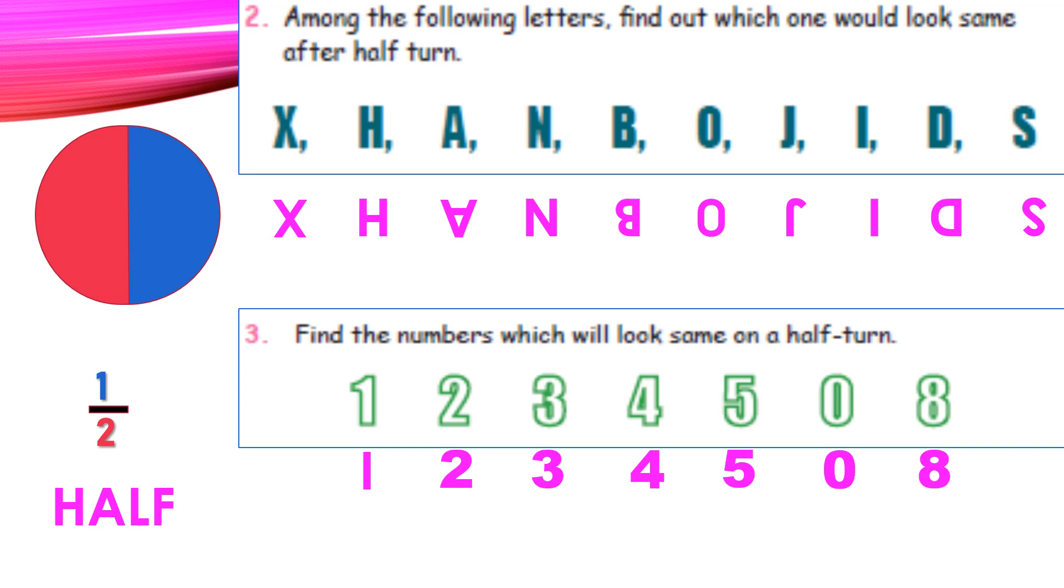Now we have to put a tick mark. X is looking as the same only. H, yes, looking same. A is not looking same, so we should not put tick for that. N, yes, it looking same only. B, no, it's not. O, yes, it's correct. J, also no. I is correct only. D, also not possible. But finally, S, also looking as the same. So here, how many answers are correct? 1, 2, 3, 4, 5 and 6.